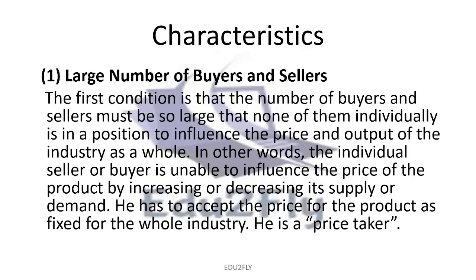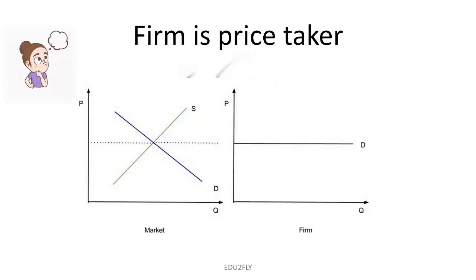So, the price for the product is fixed for the whole industry. Here we are looking at D and S — D which means demand (blue color, demand curve) and S which is supply curve. Where demand and supply intersect, there is the price. The industry sets price by the market forces of demand and supply.